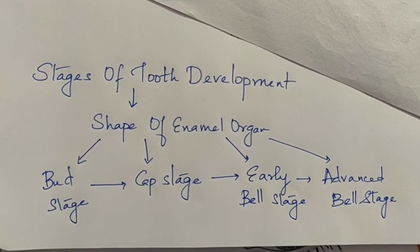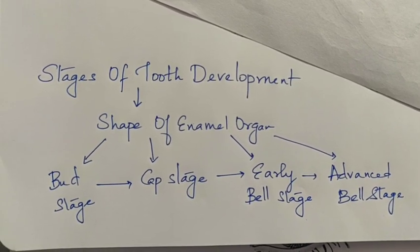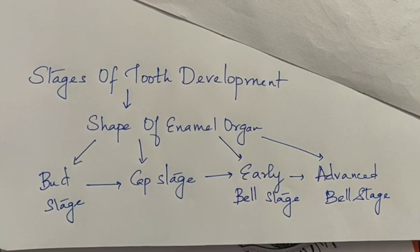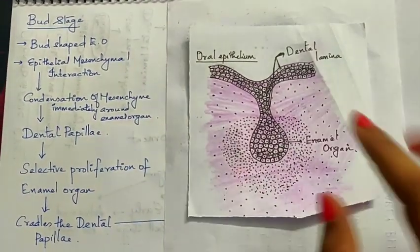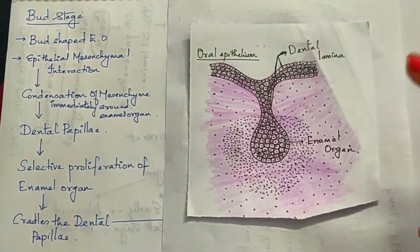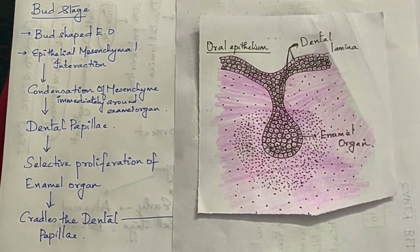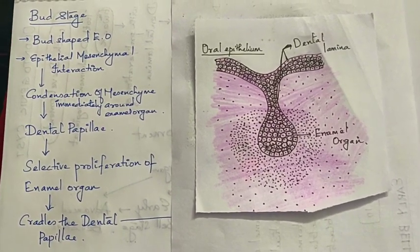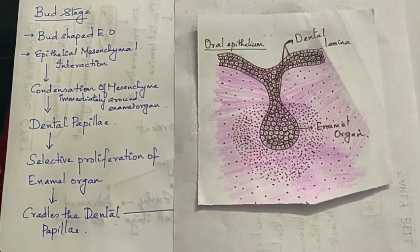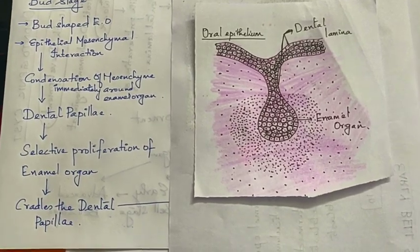The stages of tooth development are dependent upon the shape of the enamel organ: bud stage, cap stage, early bell stage, and advanced bell stage. In the bud stage, the enamel organ has a bud-like shape and forms an epithelial-mesenchymal interaction with the surrounding mesenchyme. This causes a condensation of the mesenchyme forming a dental papilla, while the remaining portion forms the dental follicle.